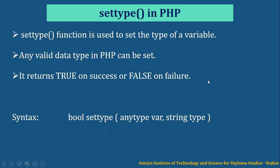Next is the setType function. The setType function is used to set the data type of any variable. Any valid PHP data type can be set, like integer, boolean, string, double, resource, object, array, etc. It returns a boolean value — true on successful operation and false on failure. It takes two arguments: first, the variable for which you want to set the new type, and second, the type you want to set.